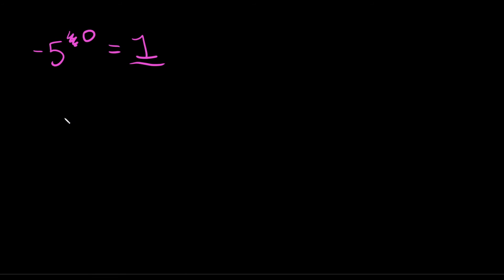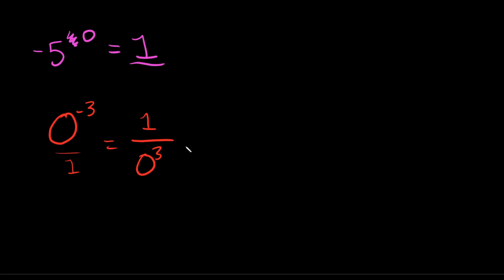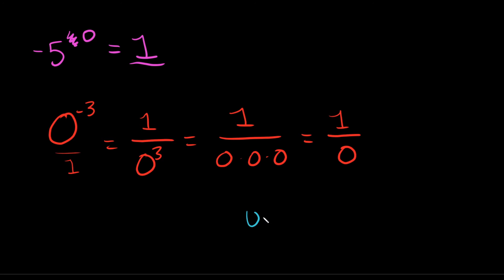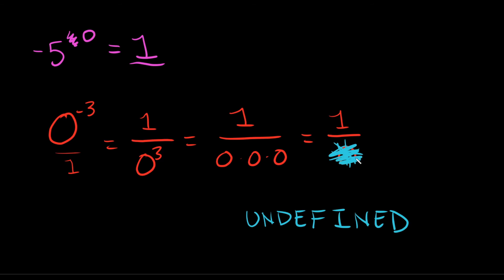One more for good measure: if I had 0 raised to the negative 3, all integers are technically over 1, so we flip it and make the exponent positive: 1 over 0 cubed. That's 1 over 0 times 0 times 0, which is 1 over 0. What's 1 over 0? Ladies and gentlemen, that is what we call undefined, because you can't divide by 0.